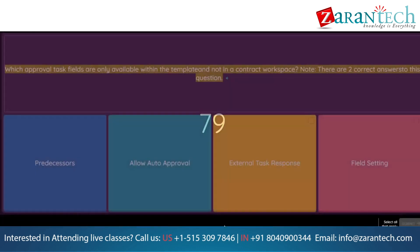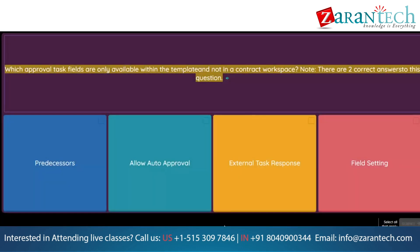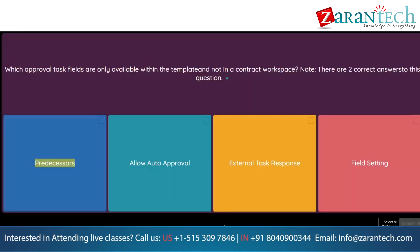Question: Which approval task fields are only available within the template and not in a contract workspace? Note: there are two correct answers. Option 1: Predecessors. Option 2: Allow auto approval. Option 3: External task response. Option 4: Field setting.